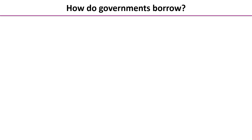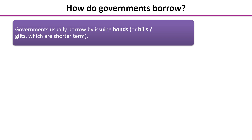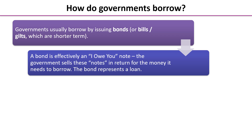So how do governments borrow money? Governments usually borrow by issuing bonds. They're also known as bills or gilts, but those tend to have a slightly shorter maturity date. Using the phrase bonds is absolutely fine in all your work and exercises. A bond is effectively an IOU note — the government sells these pieces of paper in return for the money it needs to borrow. So the bond in itself represents a loan.